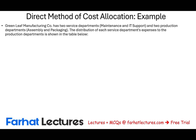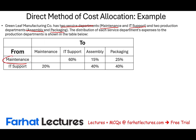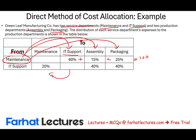We have a company, Greenleaf Manufacturing, which has two service departments — a maintenance department and an IT support department — and two production departments: an assembly department and a packaging department. The maintenance department allocates 60% of its resources to IT support, 15% to assembly, and 25% to packaging, totaling 100%. The IT support allocates 20% to maintenance, 40% to assembly, and 40% to packaging, also totaling 100%.